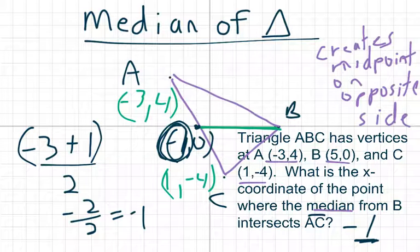If it would have asked for the y-coordinate, the average of negative 4 and 4 would be 0.